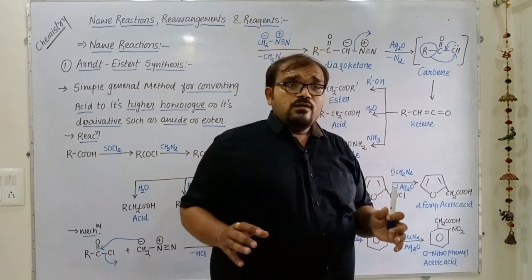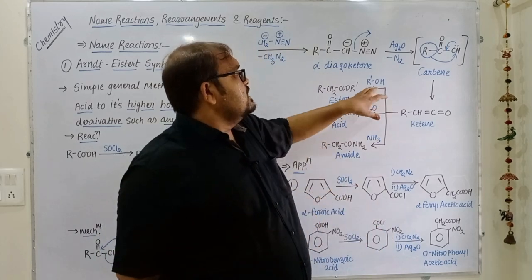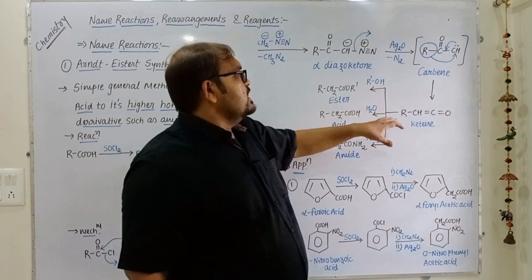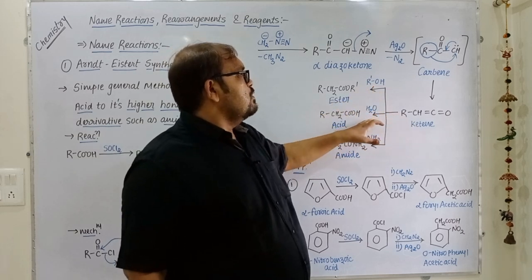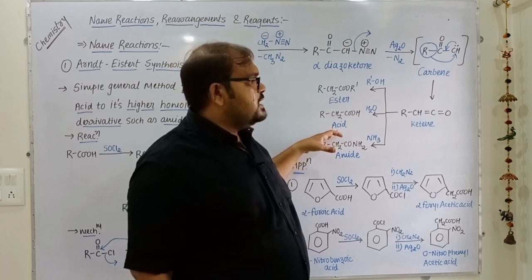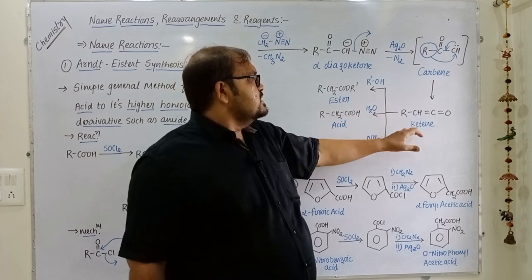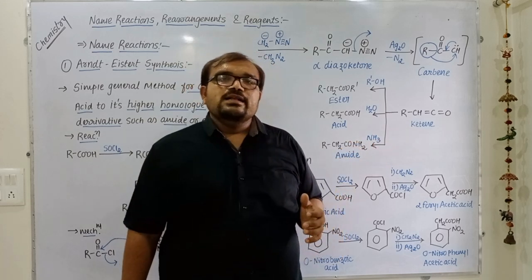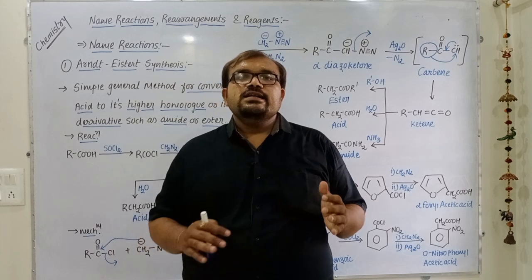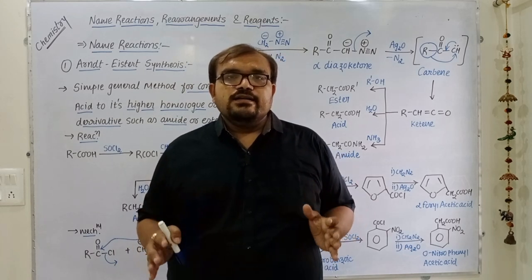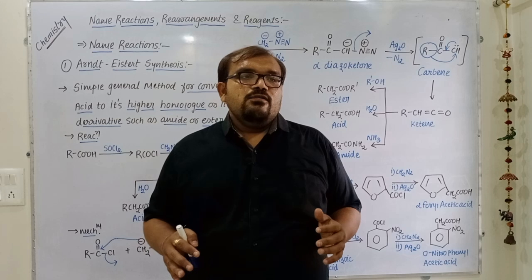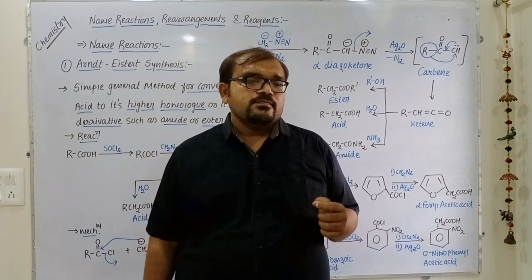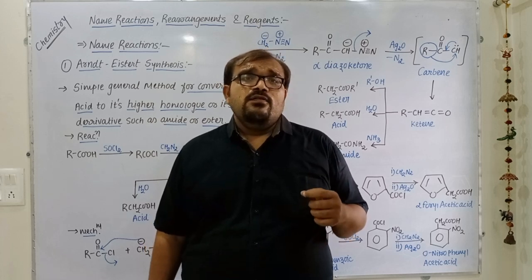When the ketene reacts with alcohol, we get an ester as product. If ketene reacts with water, we get the higher homologue acid. If ketene reacts with ammonia, we get amide as product. By this mechanism we can easily explain Arndt-Eistert synthesis.